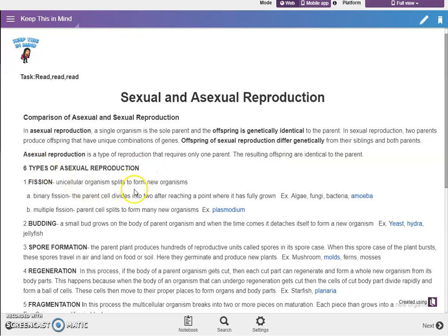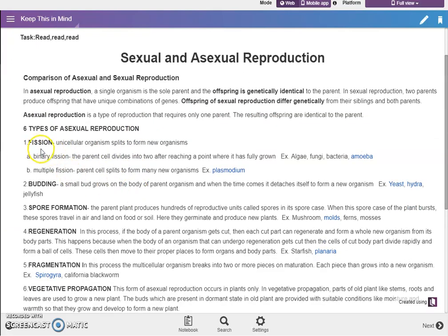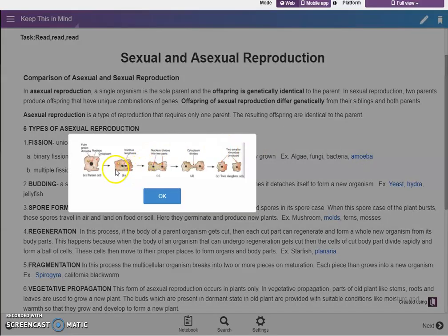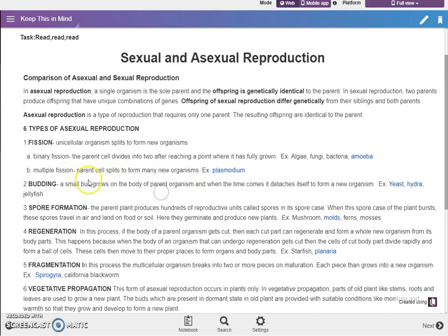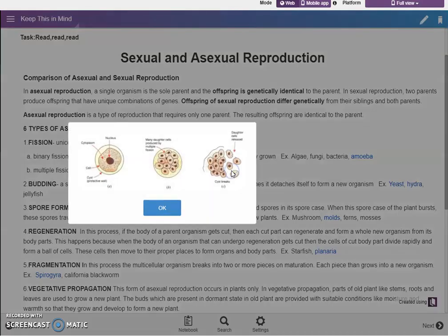Then we have the six types of asexual reproduction. First is fission. Fission can still be classified into two. We have binary fission. So take note of this highlighted word. Just click on it and it will pop out the example. This is the amoeba of binary fission. And for the multiple fission, example is plasmodium. So this is the example.